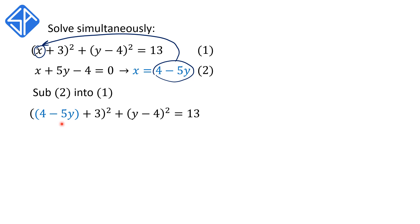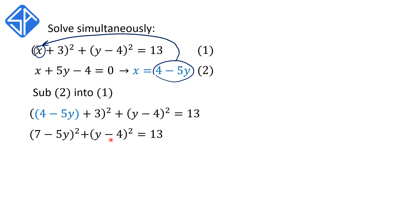To solve this, we're first going to simplify the first bracket: 4 minus 5y plus 3. This becomes 7 minus 5y, all squared. The y minus 4 squared stays the same, and the right-hand side equal to 13 stays the same as well.